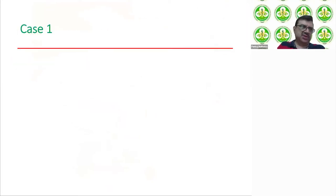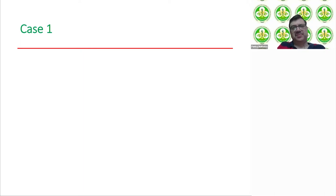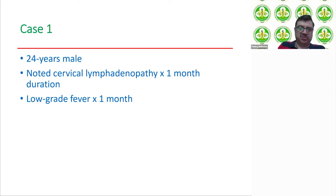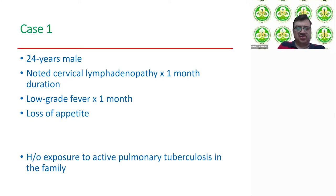To get a feel of what we actually encounter in clinical practice, I will start by sharing some cases. Case one: a 24-year-old male who noted cervical lymphadenopathy of one month's duration. He also has low-grade fever for one month and loss of appetite. When taking history, there is also a history of exposure to active pulmonary tuberculosis in his father.